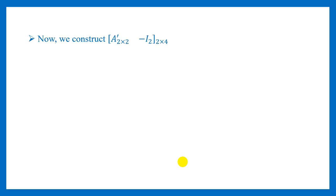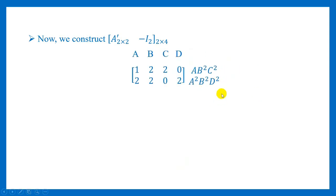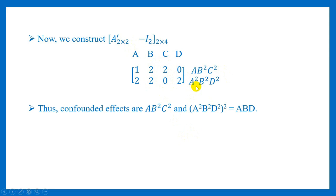Now we find the matrix A' and -I₂. We already have our A matrix, so here we have our [A' | -I₂] matrix. A' is the transpose of A, which is again [1 2 / 2 2] transposed, and the -I matrix is a diagonal matrix with all diagonal elements equal to 2.